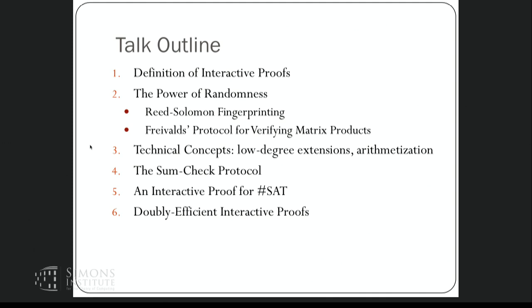I'll obviously start with the definition and motivation for interactive proofs. Interactive proofs derive their power from the combination of randomness and interaction. I'll start by giving a couple of stark demonstrations of the power of randomness on its own. Then I'll introduce important technical concepts for efficient interactive proofs: low-degree extensions and arithmetization. Then we'll see the key hammer — the sum-check protocol — apply it to sharp-SAT, and then discuss doubly efficient interactive proofs.